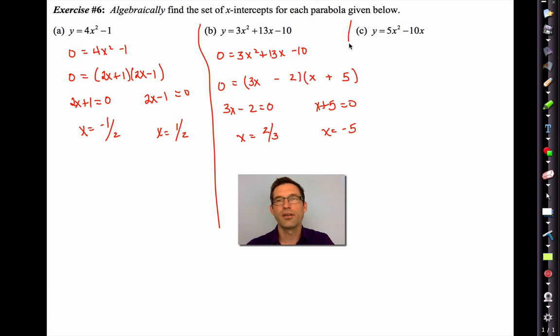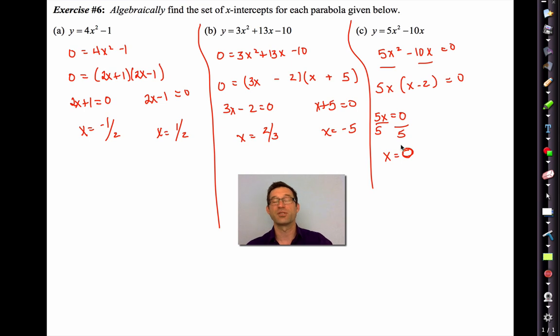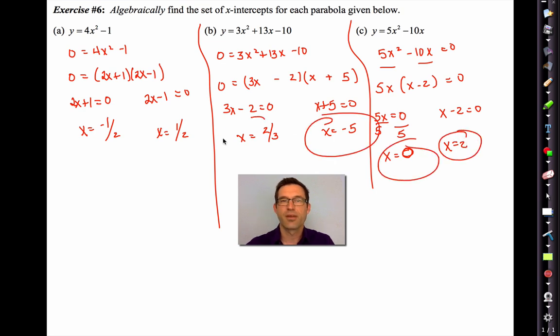Last one. 5x squared minus 10x is equal to zero. I can pull a 5x out of both of those. And now I'll set 5x equal to zero. Remember, don't take any gimmicks, no shortcuts here. Zero divided by five is zero. And then x minus 2 equals zero, and x equals 2. Might as well go back and retroactively circle all the answers just so you see them. Well, that's the zero product law. Pause the video now and write down anything you need to.